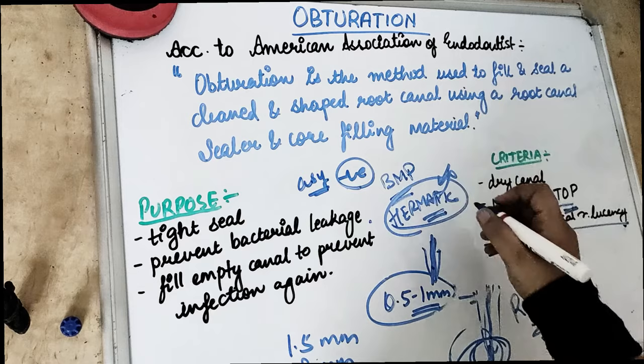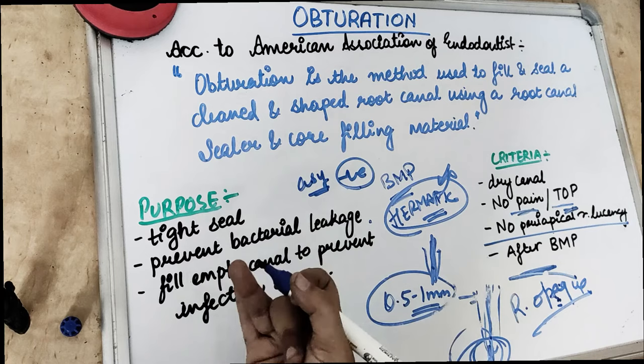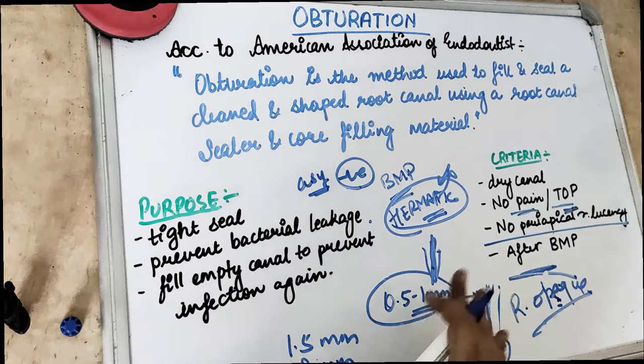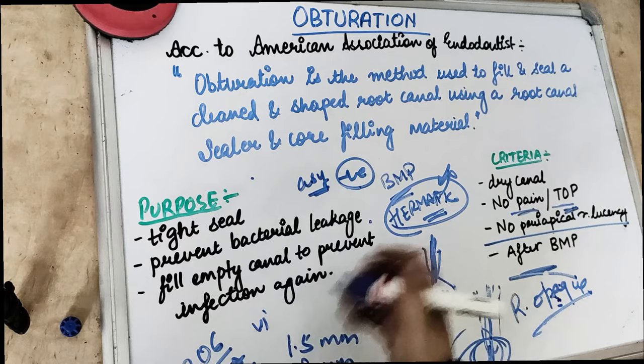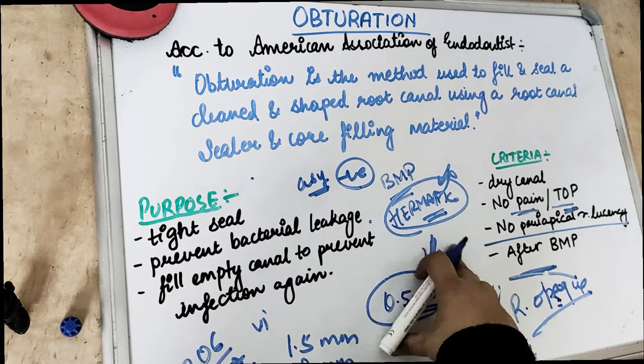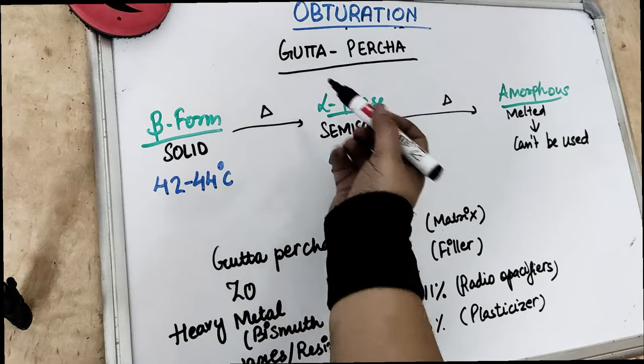The materials we use for obturation: we use GP which is our gutta-percha, and also we can use solid or metallic core materials like silver point, stainless steel, gold, and titanium. Some cements are used too. In pedo, we have used obturating materials like zinc oxide eugenol, MTA, Vitapex, and Metapex. Cements like calcium oxide, MTA, and calcium phosphate can also be used. Gutta-percha is the most common material used for obturating and has been used for more than 100 years.